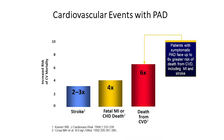This pictogram shows cardiovascular events in patients with peripheral artery disease. The risk of cardiovascular mortality is significantly increased. Stroke in patients with peripheral artery disease is amplified two to three times. Having a fatal myocardial infarction — a heart attack that can lead to death — is amplified four times in patients with peripheral artery disease. Deaths from cardiovascular disease overall are amplified six times. This tells us that this is not a benign disease.